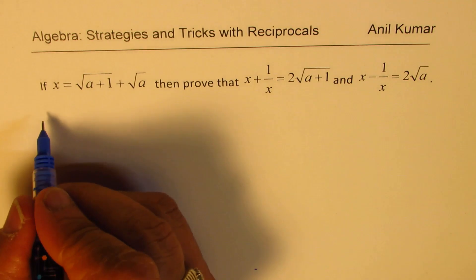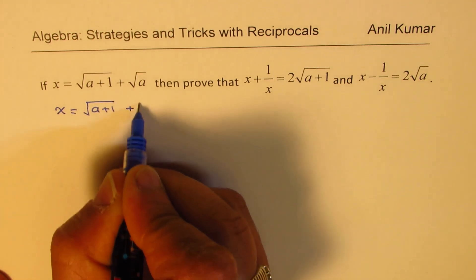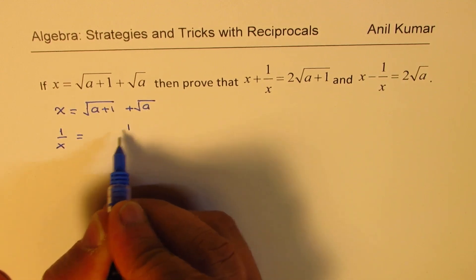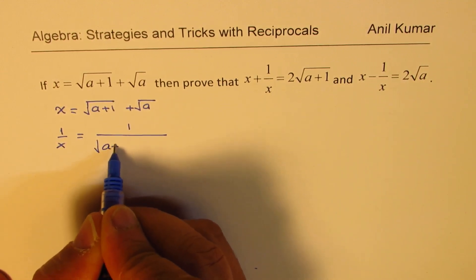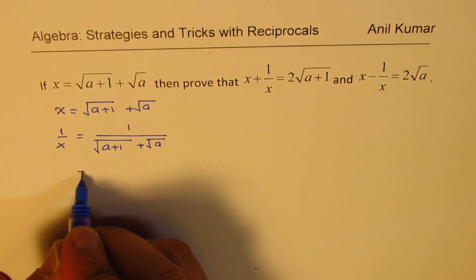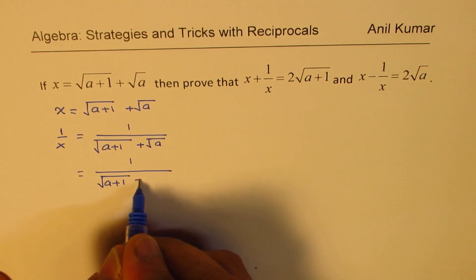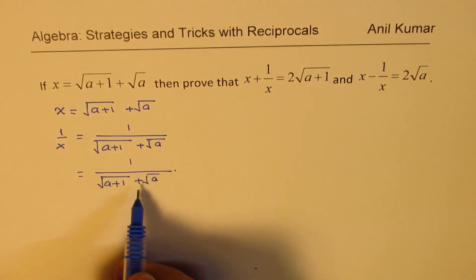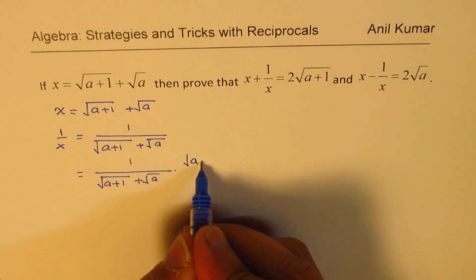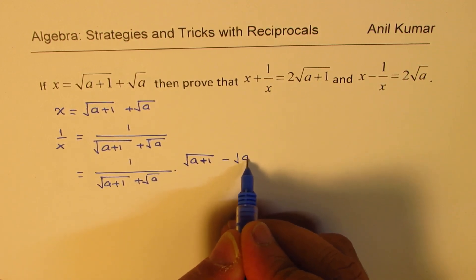So x equals square root of (a+1) plus square root of a. How do we find 1 over x? Well, 1 over x should be equal to 1 over all this, which is square root of (a+1) plus square root of a. Whenever you have such a situation, it is good practice to rationalize.